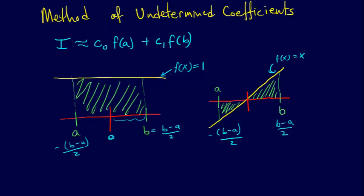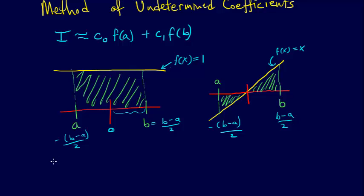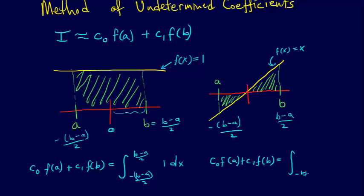We can write out the integrals for each of these. We have c0 f(a) plus c1 f(b) equals the integral from negative (b-a)/2 to positive (b-a)/2 of 1 dx. And we also have c0 f(a) plus c1 f(b) equals the integral from negative (b-a)/2 to (b-a)/2 of x dx.